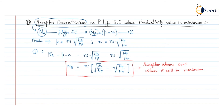In this way we can calculate the acceptor concentration value inside a p-type semiconductor when the conductivity of that p-type semiconductor is minimum. Thank you.